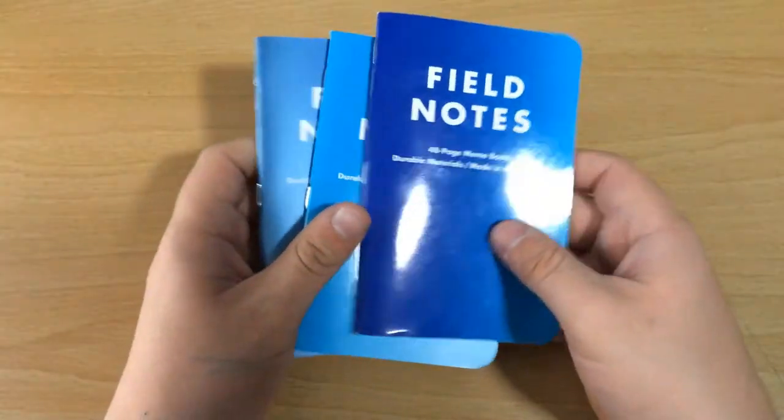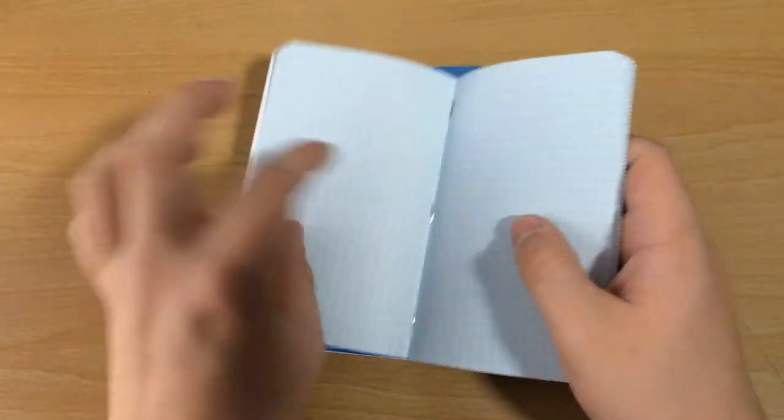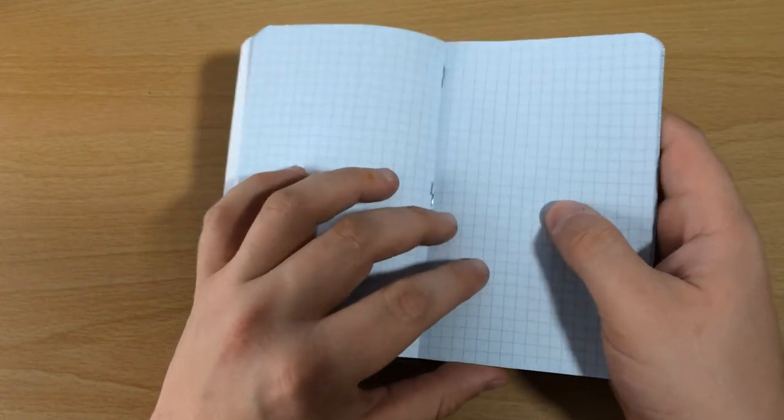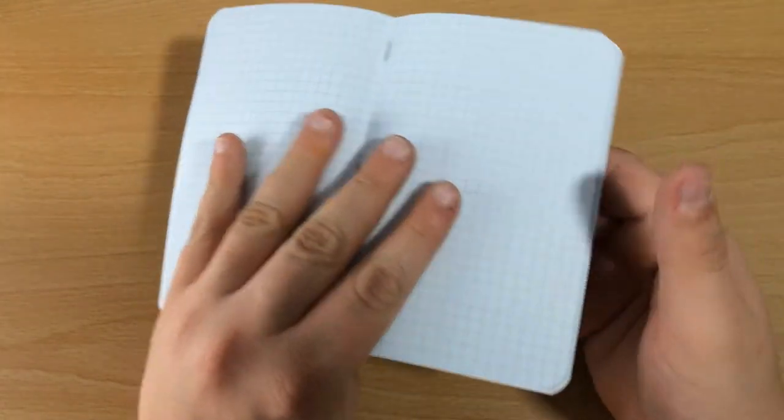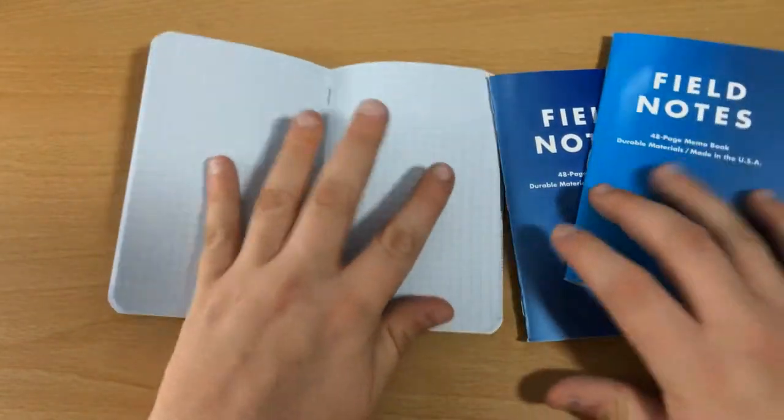We'll talk about the interior now. Just like all other editions of Field Notes, it's the Finch opaque smooth 50-pound text bright white paper. But the big difference is, it's not actually white anymore. They did a wash over all these papers.